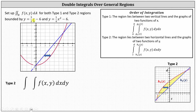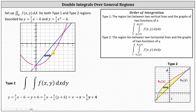Let's solve y equals 3/2 x minus 6 for x. We first add 6 to both sides, then multiply both sides by 2/3, and we get x equals 2/3 y plus 4. Because the region is bounded to the left by the line, 2/3 y plus 4 is the lower limit of integration.